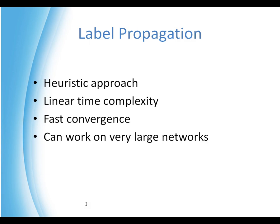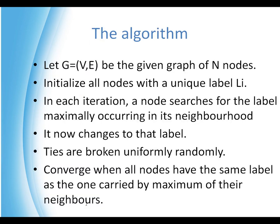It has very fast convergence and can work well on very large networks. Let G be a graph where V are the vertices and E is the set of edges — a graph of n nodes. What we do is put a unique label on each and every node; let the labels be L_i, where L_i is the label of the i-th node. In each iteration, a node searches for the label that maximally occurs in its neighborhood — it searches its neighborhood and sees which label has the highest frequency, then changes to that label.